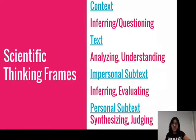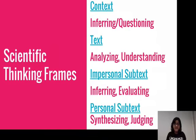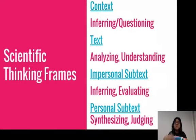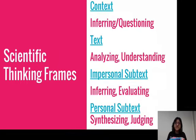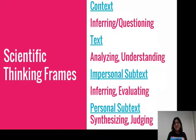The next strategy is the scientific thinking frames from Kings County, which have four overarching frames. I plan to make laminated cards for students to use each time they read a scientific document. The first frame is context — inferring and questioning when reading a scientific text. The second is text — analyzing and understanding the text. The third is impersonal subtext — inferring and evaluating the text. The fourth is personal subtext — synthesizing and judging the text.